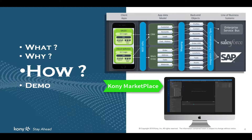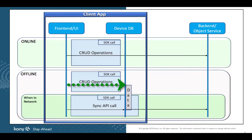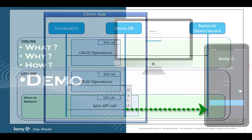To try out offline objects, you can download the work order app from the Kony marketplace. So how is it different from online? In online mode, data is sent directly from the client app to the backend using SDK calls — all create, read, update and delete operations happen directly between the client app and backend. Whereas in offline mode, these operations happen between the client app and a local database stored on the mobile device itself. When the device does not have network connectivity, all data is stored in the device DB, and once the device gets networked, the client app makes a sync API call which sends all data stored in the device DB to the backend.